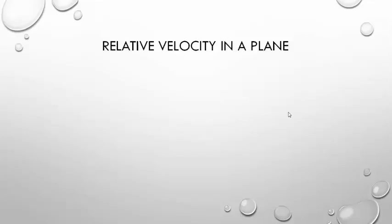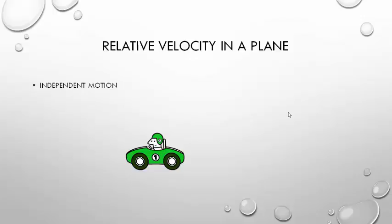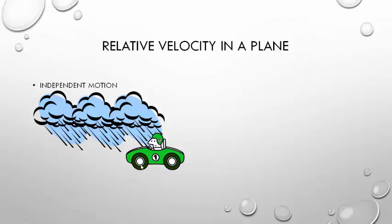Now, relative velocity in a plane. To solve numericals in the examinations, there are namely two concepts for relative velocity in a plane. First one is independent motion. Independent motion is when two objects are moving independently but with respect to each other their motion is considered. For example, a car moving through rain - the angles at which the raindrops are striking the car, that becomes your relative velocity for independent motion.